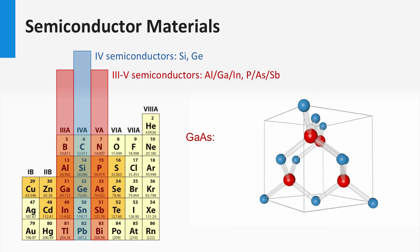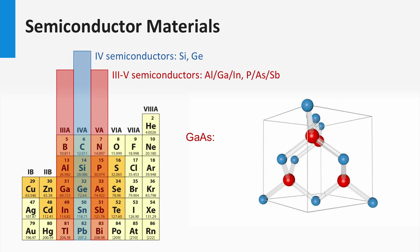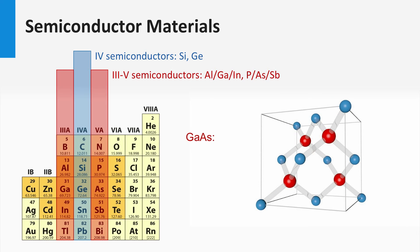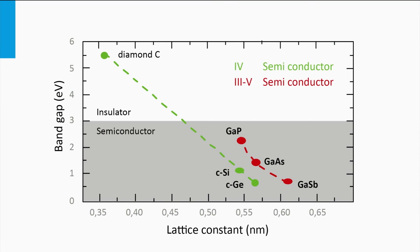Semiconductor materials can also be made from elements other than those with four valence electrons. Let's consider the so-called 3-5 semiconductor materials like gallium arsenide. A 3-5 semiconductor consists of two elements: one element has three valence electrons and the other has five valence electrons. These materials can, similar to silicon, form a diamond cubic crystalline lattice. In the crystalline lattice shown here, the gallium atoms are blue and the arsenide atoms are red. Every gallium atom neighbors four arsenide atoms, and every arsenide atom neighbors a gallium atom. For 3-5 materials based on gallium — like gallium phosphide, gallium arsenide and gallium antimonide — the larger the lattice constant, the smaller the band gap will be. Gallium phosphide has the smallest lattice constant and therefore the largest band gap.